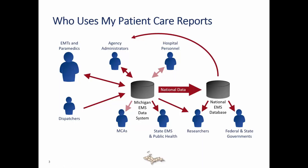One way the information is used is by medical control authorities. MCAs are currently receiving access to the Michigan ImageTrend Elite system so they can view patient care reports for everything that's happened within their MCA. Some MCAs have access; there are still a few who don't yet. They use it to get a good understanding of what's happening throughout the MCA. The state EMS office and other areas of public health also use the information to make public health or policy decisions at the state level.